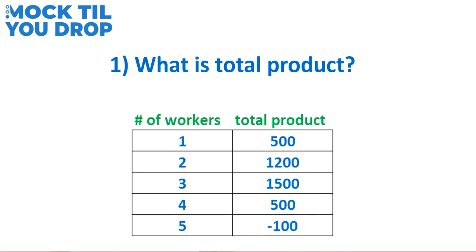So in this case one worker can produce 500 baskets, two workers can produce 1200 baskets, and so on. Total product is simply the total number of outputs, or number of baskets produced. You'll notice that with three workers 1500 baskets are made, but with four workers only 500 baskets are being made. It would not make sense as a firm to hire the fourth worker, since four workers are producing far less baskets than three workers. Perhaps the fourth worker is just getting in the way of the other workers and the work is not getting done as efficiently.